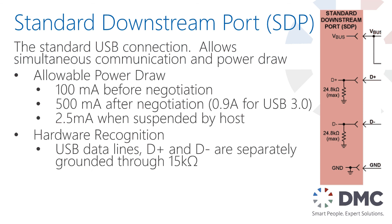The standard downstream port is what you're used to seeing on your computer or any other device that communicates with your phone or USB device. It allows up to 100 milliamps before negotiation — before your computer talks to the USB device and decides what it is. After negotiation it can supply up to 500 milliamps, and this has been updated to up to 900 milliamps for USB 3.0. It also has to be capable of going down to 2.5 milliamps if the host computer suspends the device, such as when you put your laptop to sleep.